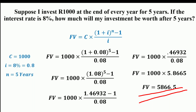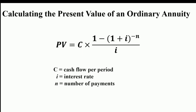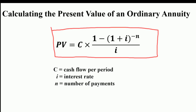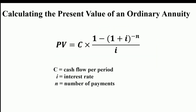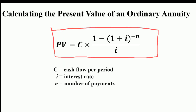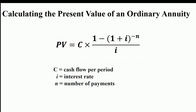The future value of the investment of rupees 1,000 after 5 years will be 5,866.5. As against the future value calculation, the present value calculation tells you how much money would be required now to produce a series of payments in the future, again assuming a set interest rate. The formula for calculating the present value of an ordinary annuity is: PV = C × [1 − (1 + i)^(−n)] / i, where C is the cash flow per period, i is the rate of interest, and n is the number of payments.